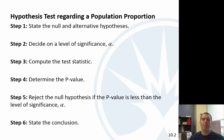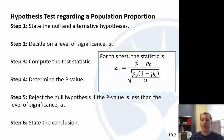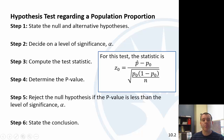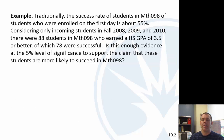For a population proportion, the test statistic is a z-score: p-hat minus the mean over the standard deviation. We're going to do the first one possibly by hand, but most of them we'll just use StatCrunch to calculate.